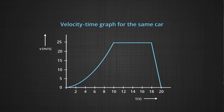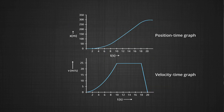After the constant velocity phase, the velocity suddenly drops to zero, meaning the car must have stopped. This is confirmed when we look at both graphs together with matching time axes — the position becoming constant for a certain duration shows the car slowed down and then stopped.